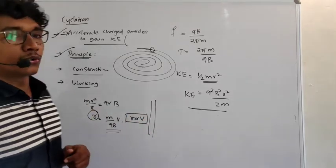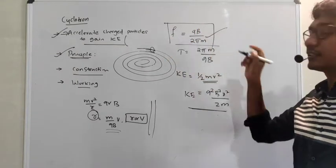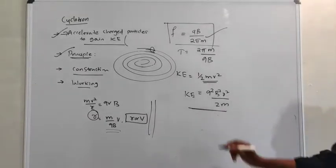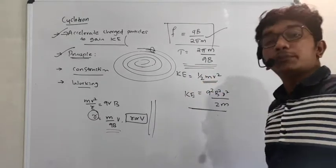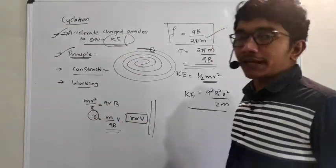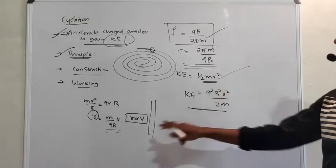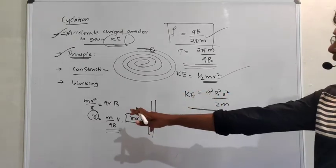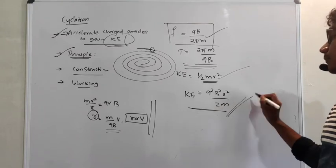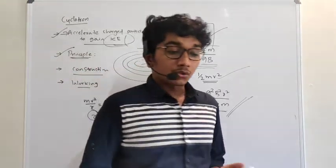One more thing to note: the cyclotron frequency is given by ν = QB / 2πm, and the time period is T = 2πm / QB. For the kinetic energy, we want the maximum kinetic energy: KE = ½mv². Substituting V = QBR/m, we get KE = Q²B²R² / 2m. These are the important formulas about the cyclotron.